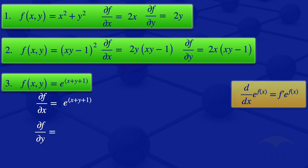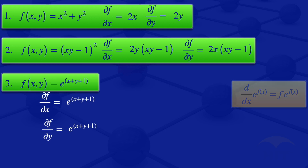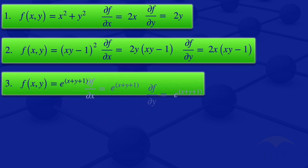For the partial derivative of f with respect to y, we treat x as if it's a constant. Differentiating the exponent (x + y + 1) with respect to y gives 0 + 1 + 0 = 1, since the derivatives of constants are zero. So the partial derivative of f with respect to y is also e^(x + y + 1).